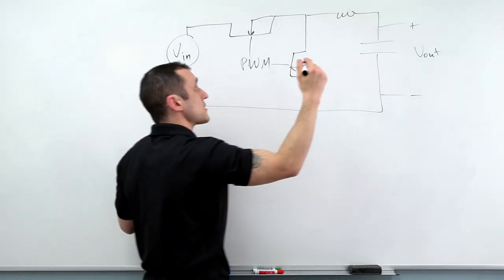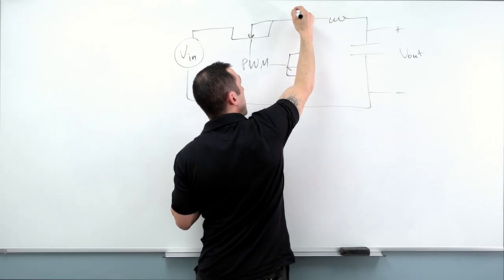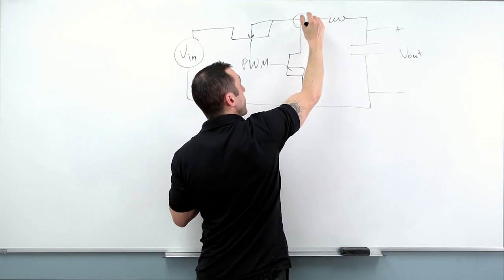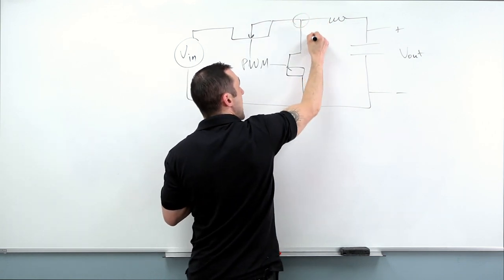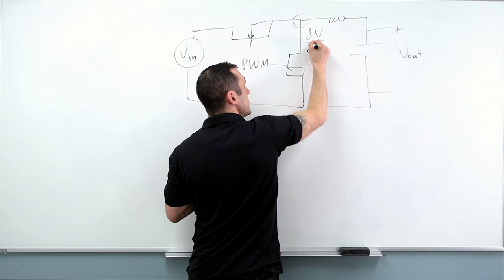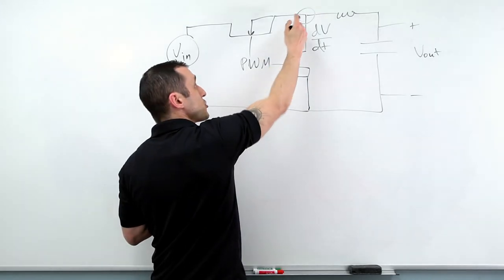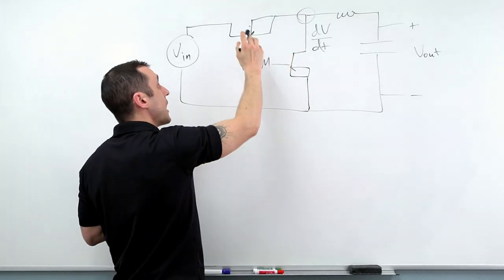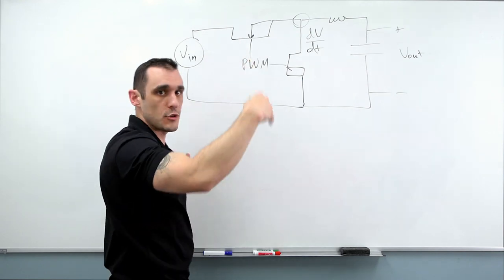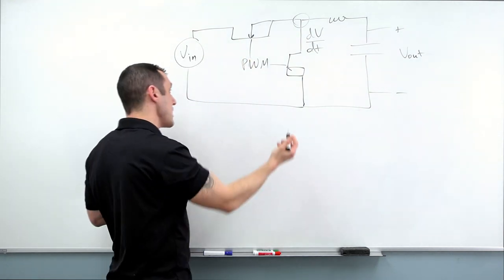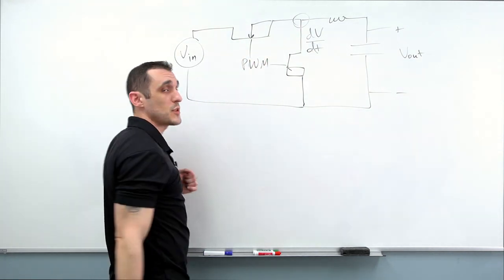So typically in power regulators the switching node is right here, and this is the node where you have basically high DV/DT signals. The voltage is switching very quickly here because these MOSFETs are opening and closing or turning on and off repeatedly due to this driving by this PWM signal.